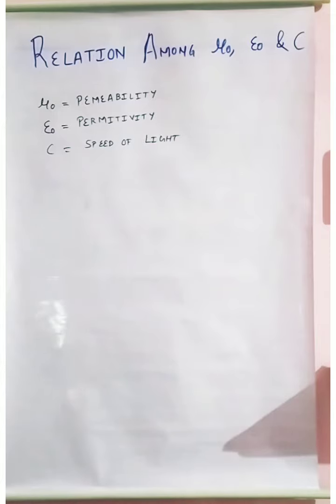So what is μ₀? μ₀ means the permeability. And what is ε₀? ε₀ means the permittivity. And what is c? c means the speed of light. So now why are we studying all this? We are going to see that is there any relation among all these three.